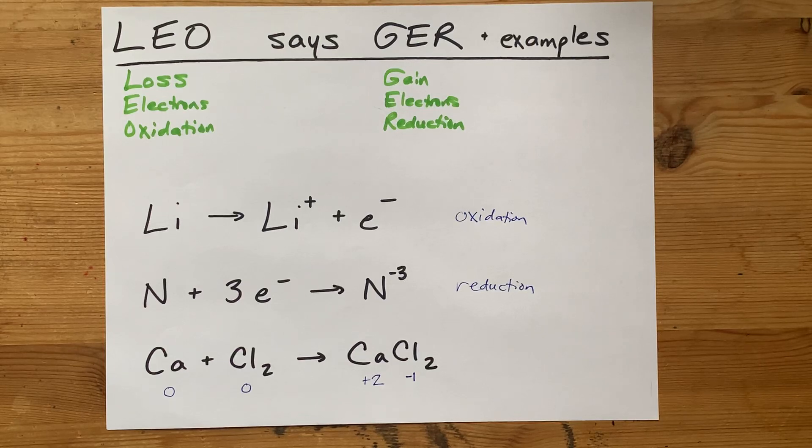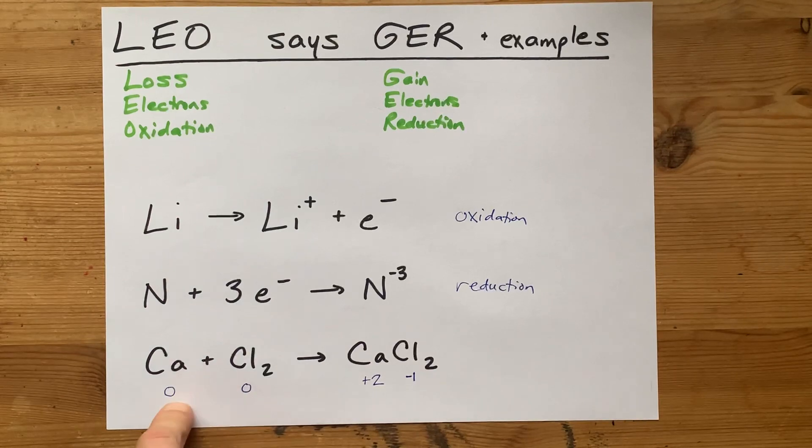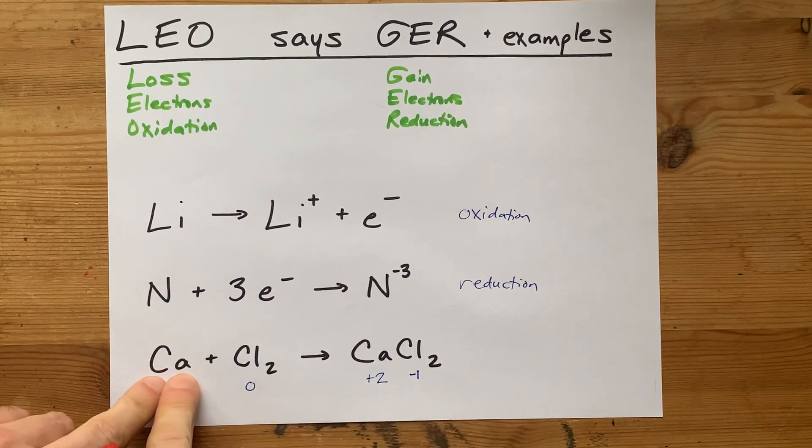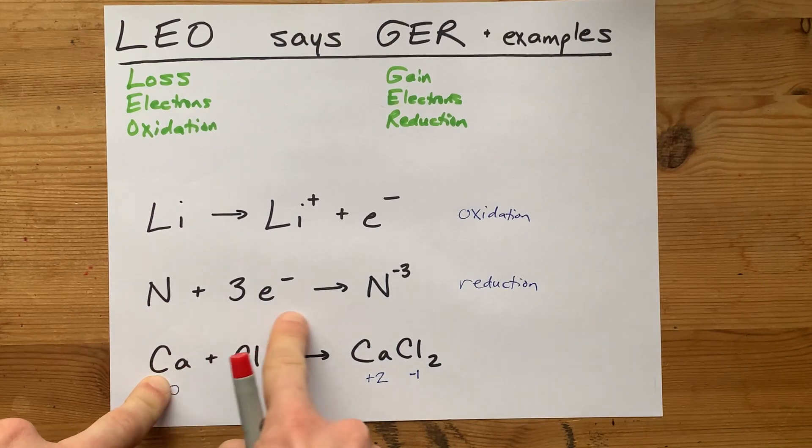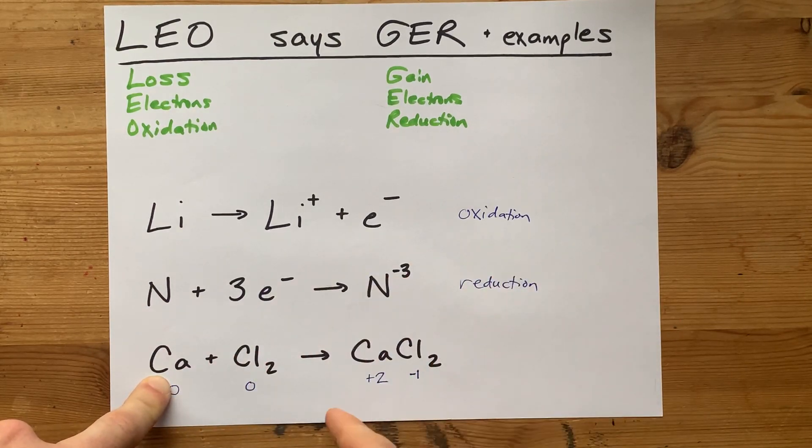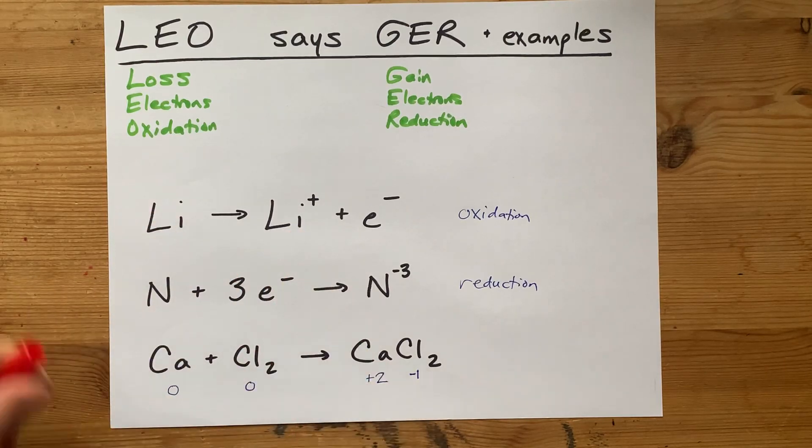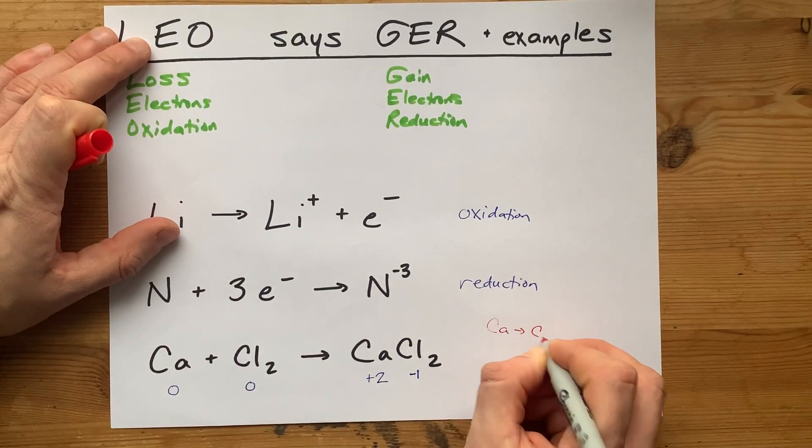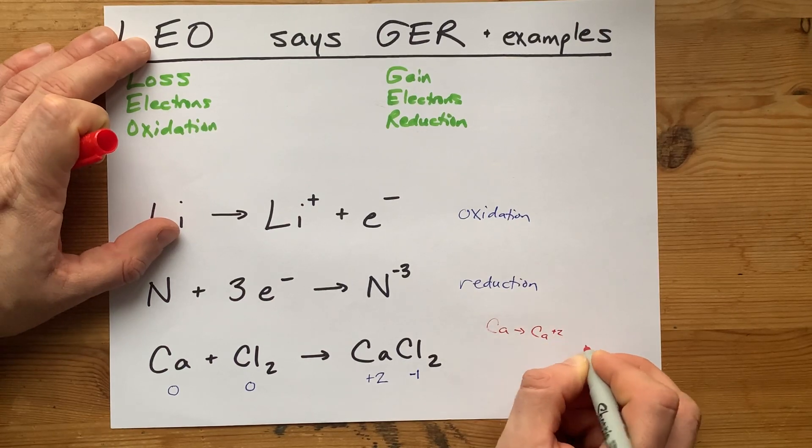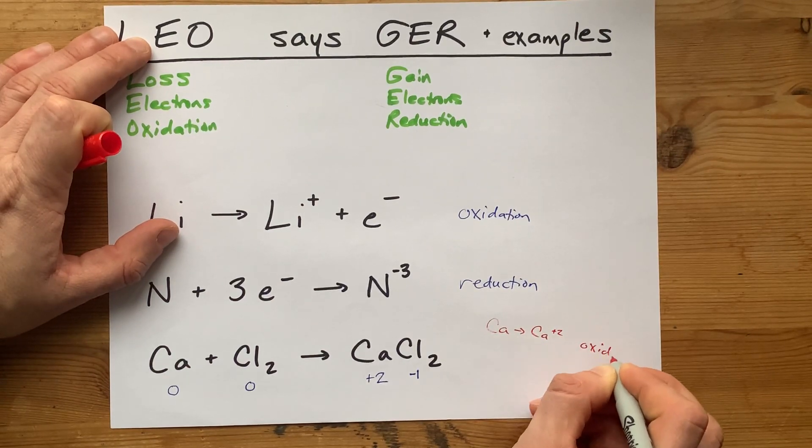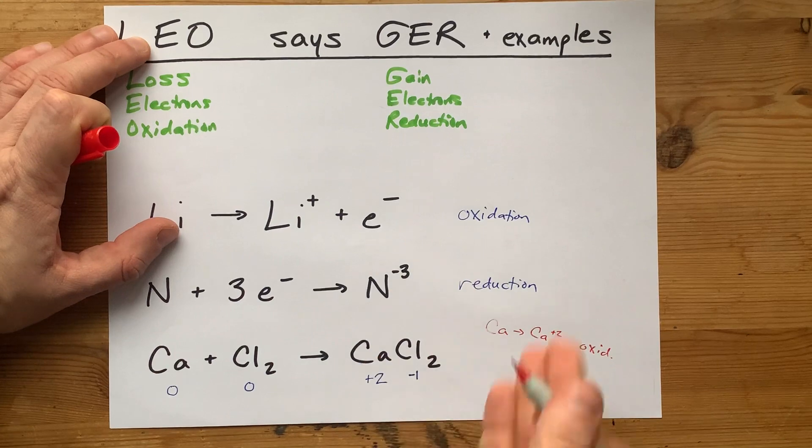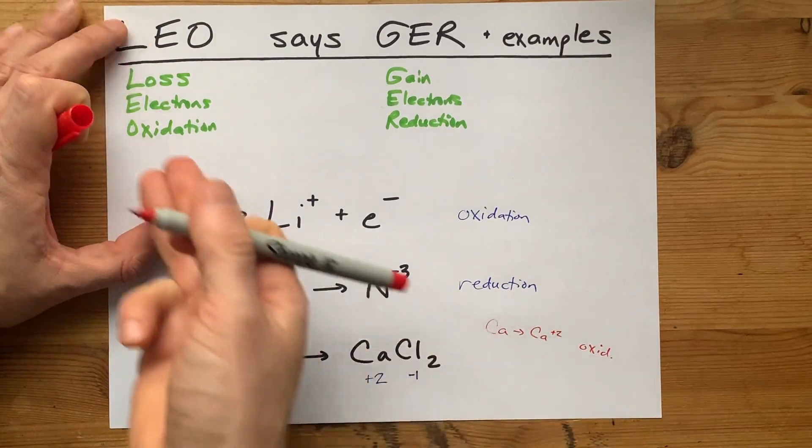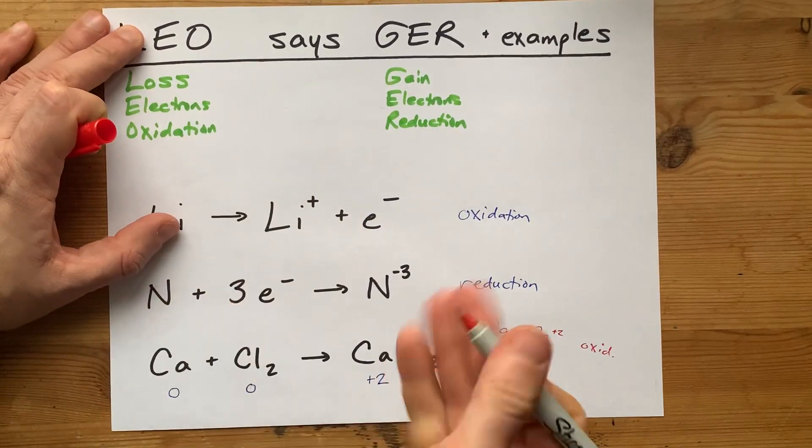But look, those charges, although I'm calling them oxidation numbers, are different from what they were. Calcium broke apart, gave two electrons away to who knows where, to become a positive ion, just like this lithium did. Calcium becoming calcium 2 plus is an oxidation. That's because it's losing electrons. A loss of electrons is oxidation. Get it?